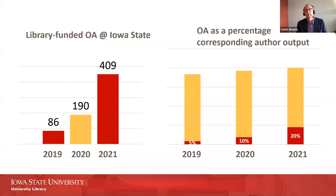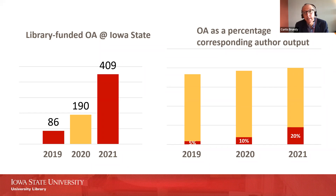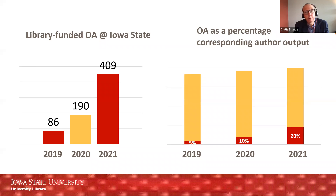Iowa State is a signatory of OA 2020. We're committed to transitioning our previous subscription spend to support for open access, and we're doing this in a variety of ways: we've launched a new digital press, we're supporting open access infrastructure, and we're making open access agreements. I like to think of this as a multimodal strategy. For our open access agreements, we currently have, depending on how you categorize them, in the ballpark of 15, utilizing a variety of models from Subscribe to Open to Read and Publish and things in between.